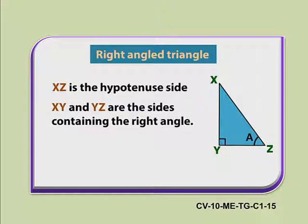Suppose the measures of XY and YZ respectively are 3 cm and 4 cm. What is the measure of the Hypotenuse? Yes, you are right. We can find by using Pythagoras Theorem.